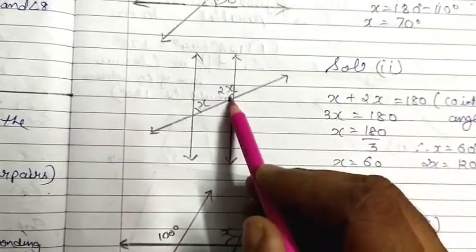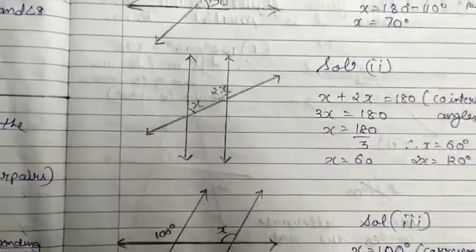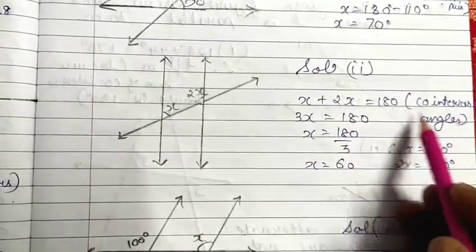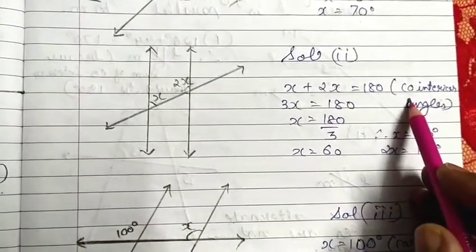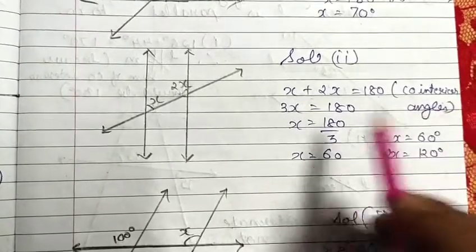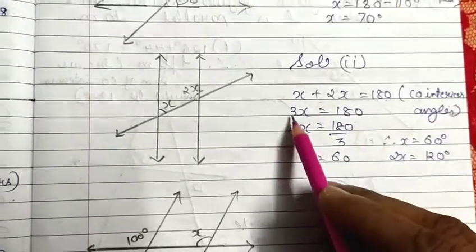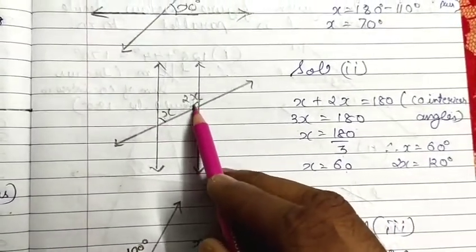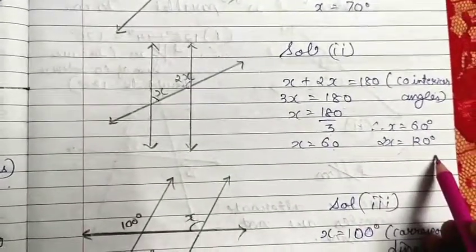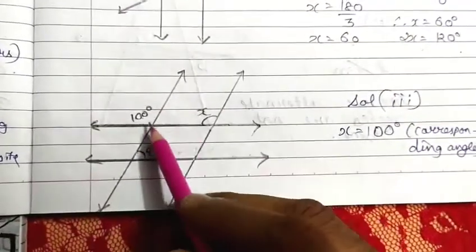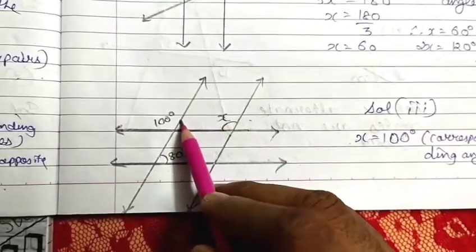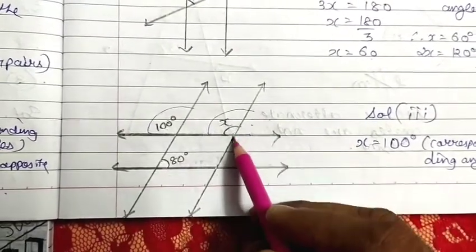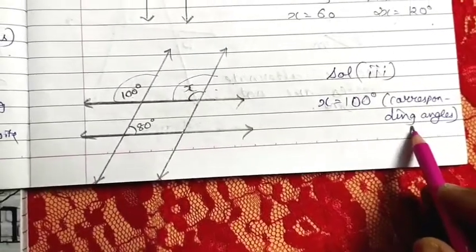For the next part: the two angles X and 2X are co-interior to each other. The sum of co-interior angles always equals 180 degrees. So X plus 2X equals 180, giving 3X equals 180, so X equals 60 degrees. Check: 60 plus 120 equals 180. For the third part: the two angles are corresponding to each other, so directly write X equals 100 degrees according to corresponding angle.